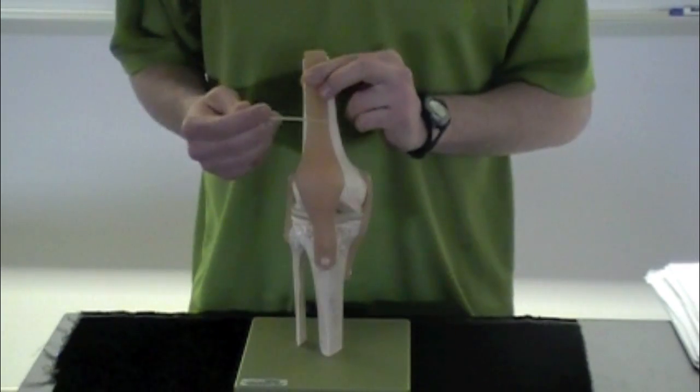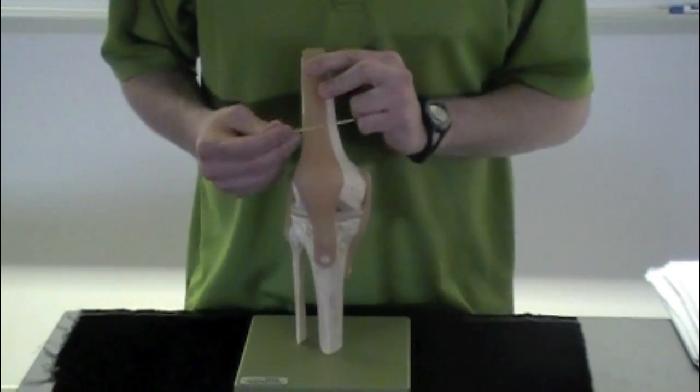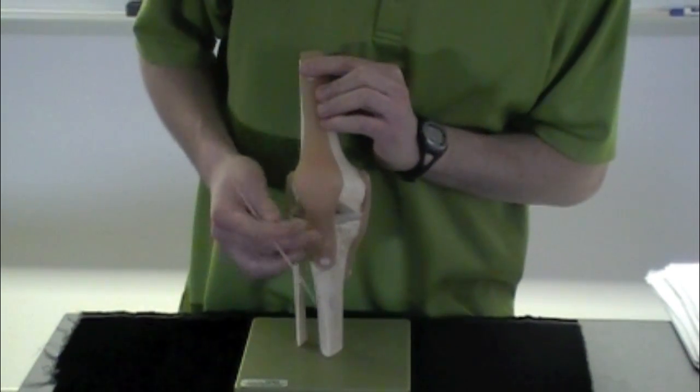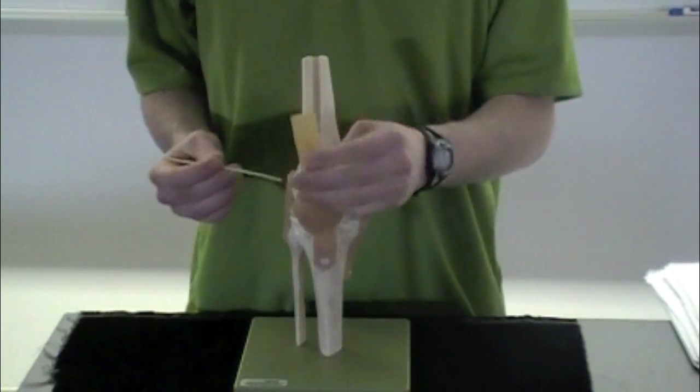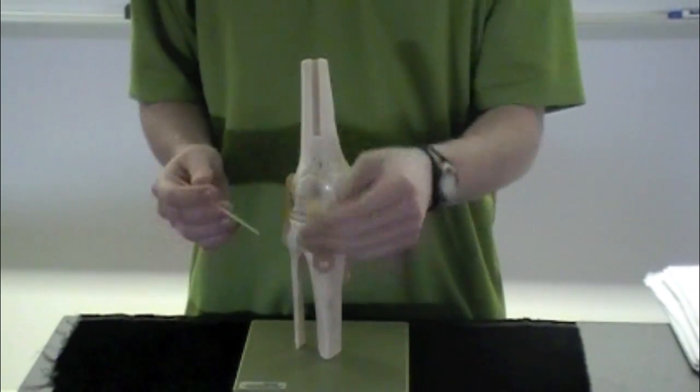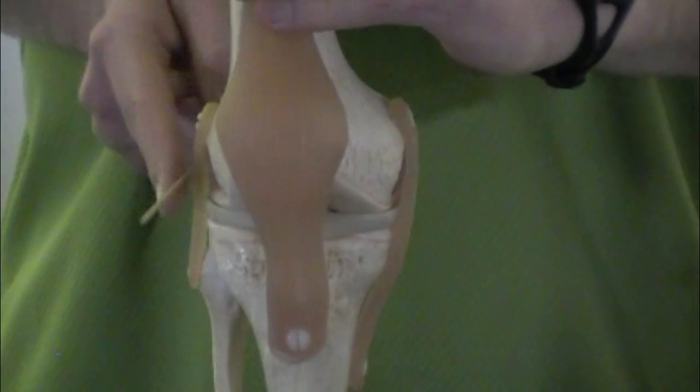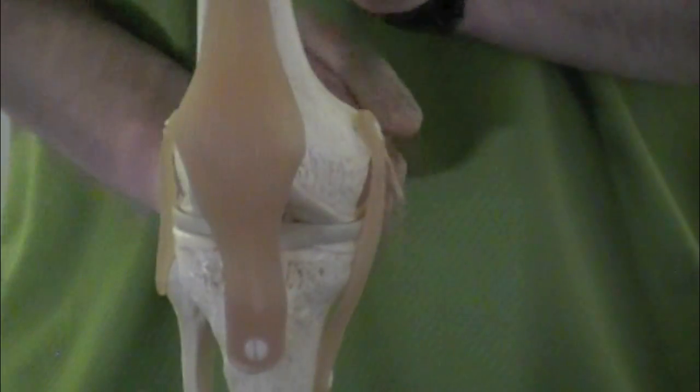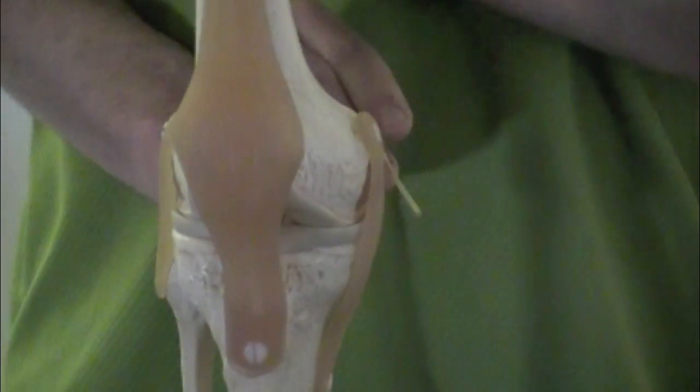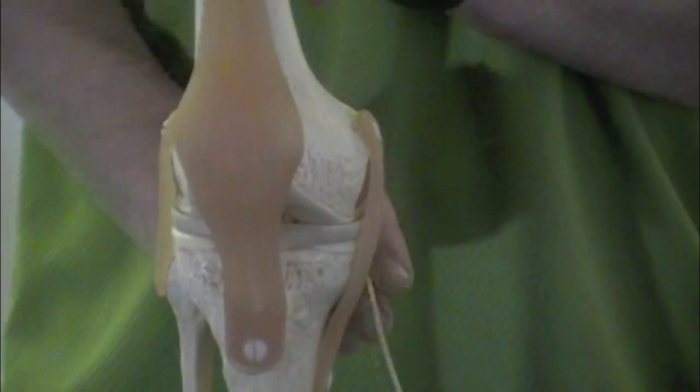So your ligaments. Starting off here, starting superiorly and going down inferiorly, we have the patellar ligament. And you can see that patella right there that it encapsulates. Then we have your fibular collateral ligament or lateral collateral ligament. It sits laterally with that fibula. You can see it right there. Opposite to that, we have the medial collateral ligament or tibial collateral ligament. It sits right there, medial.